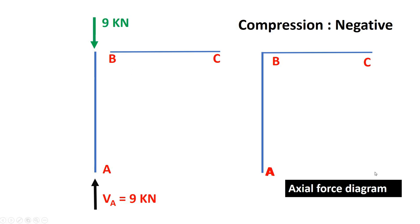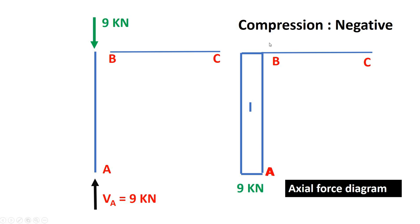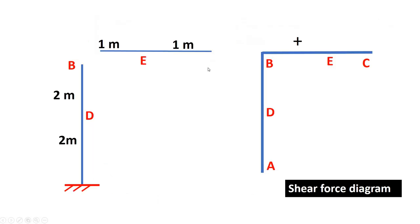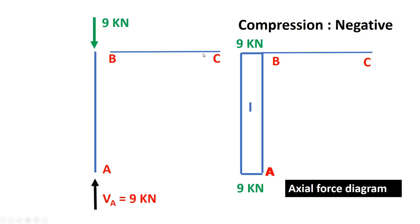After drawing the free body diagram, we determine the shear force, bending moment, and axial force diagrams. For the axial force diagram, we have compression here, so I'm taking compression as negative. The value is 9 kN — the diagram is negative. For the horizontal member, we don't have any axial force, so no diagram there.